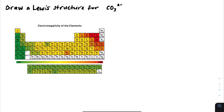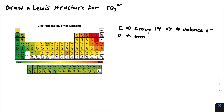We're going to do one last example: the Lewis structure for CO₃²⁻, the carbonate ion. Carbon is in group 14, so it has four valence electrons. Oxygen is in group 16, so it has six valence electrons. Since there are more oxygens than carbons, we put carbon in the center — when a molecule has two elements with one more numerous than the other, the less numerous element goes in the center. So we draw carbon in the middle with three oxygens around it.